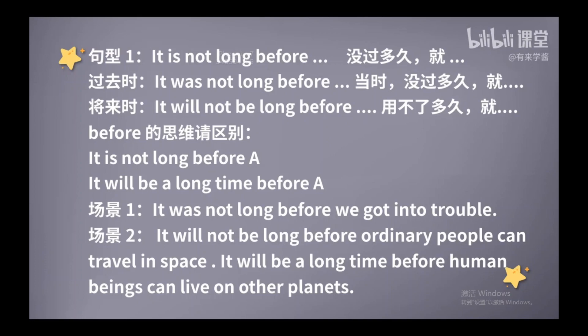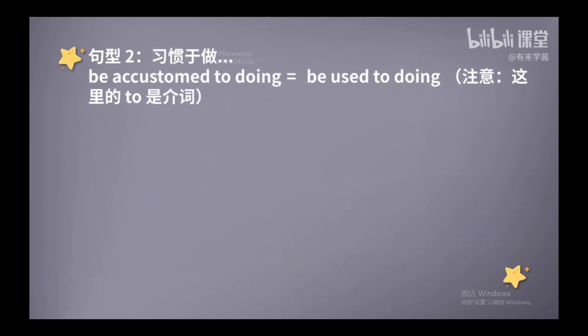下面我们再次回到课文的刚才那句话，里面还有一个重要表达，叫做be accustomed to doing something，意思是习惯做某事。注意了，这里的to呢，它是一个介词，所以后面必须跟上一个名词或者动名词形式。每个人对环境都有一定的适应能力。当你逐渐适应了或者说习惯了一件事，我们就可以用be accustomed to something or doing something这个表达。